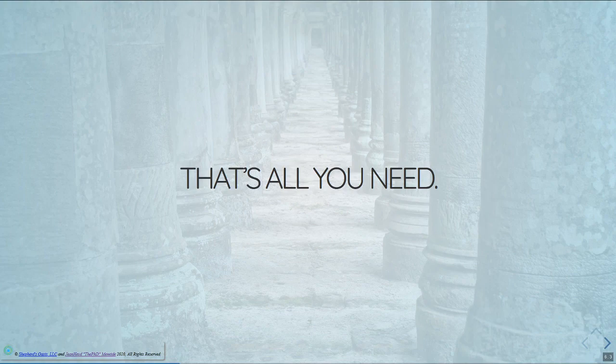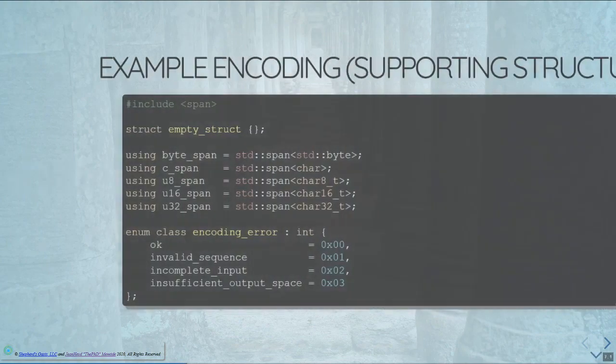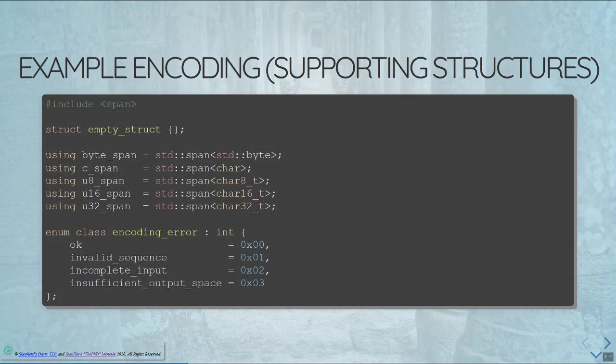This is the hill I'm going to die on. This is all you need — period, point blank. You only need those seven things. That's lucky seven — you can build literally everything on top of that. Some of you are probably thinking, pardon me, is that true? I'm going to prove it to you. Here are some supporting structures. We have an empty struct, a byte span which is just a span of `std::byte`, and a bunch of type aliases for spans of various types — `c_span` which is a `char` span, `u8_span` which is a `char8_t` span, `u16_span` for `char16_t`, et cetera.